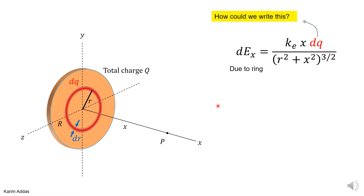How do we rewrite dq? What kind of charge distribution is this — line charge, surface charge, or volume charge? This is a surface charge distribution; the thickness is negligible, essentially zero, so the charge is distributed on a surface. Therefore we can write dq as sigma dA.